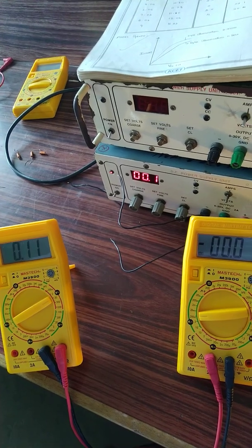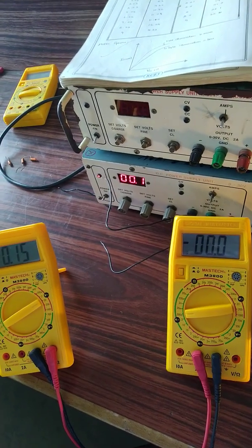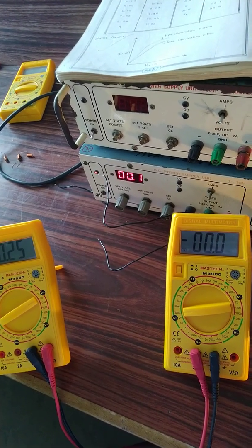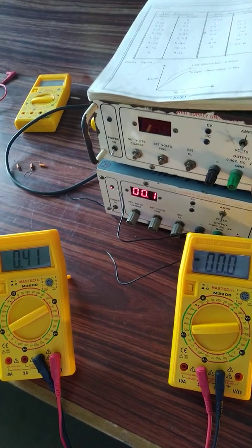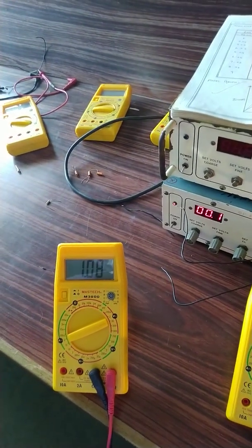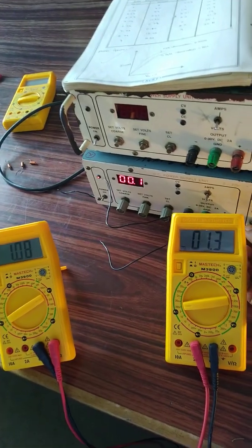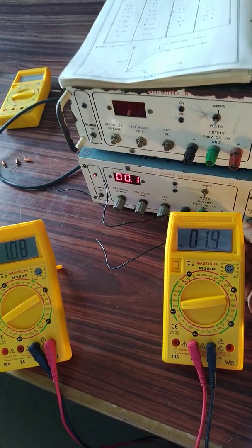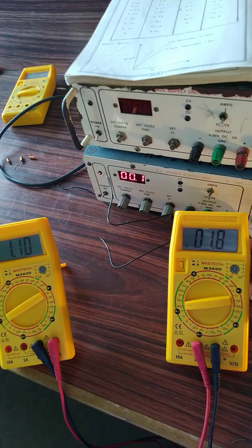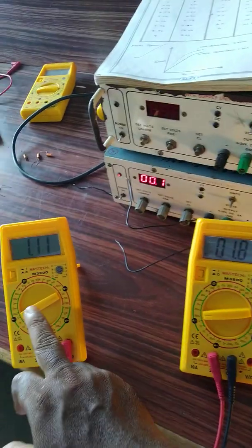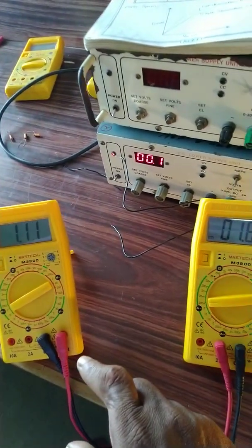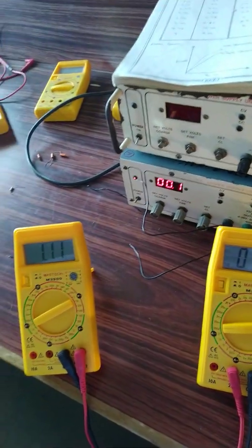So next the value is 0.11, the value is 0.15, the value is 0.21, the value is 0.25, the value is 0.44. So this is 1.08, 1.3, the value is 1.09, 1.5, 1.10, 1.8.